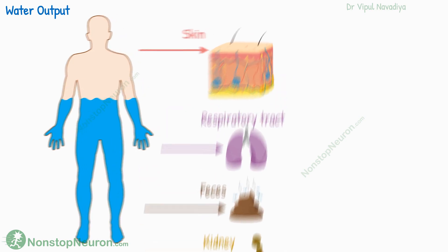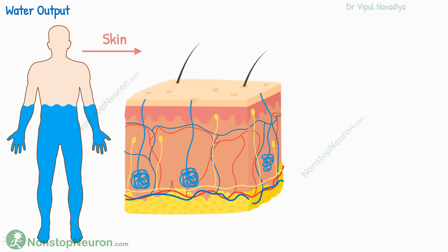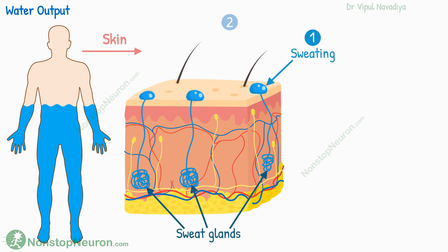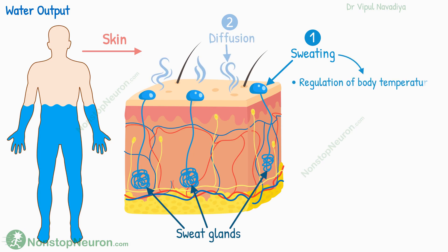First, let's talk about the skin. Water loss from the skin occurs in two ways: by sweating through the sweat glands and by diffusion through the skin. Sweating is mostly part of the regulation of body temperature.